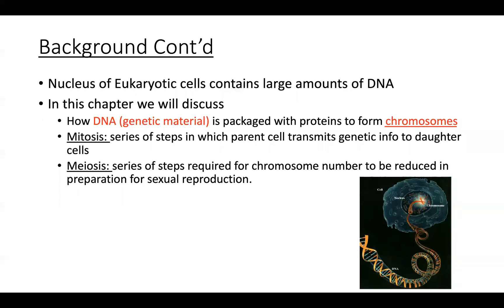We want to quickly run through the steps of mitosis and meiosis, which are two processes for the generation of cells in our bodies. From mitosis, there's a series of steps in which the parent cell transmits genetic information to the daughter cell. The results of mitosis generate identical cells — it's almost like cloning. During mitosis, you make an exact copy or replica of the cell that you start with.